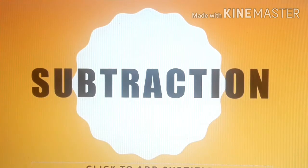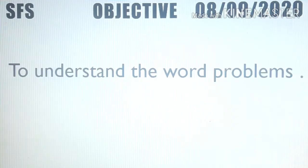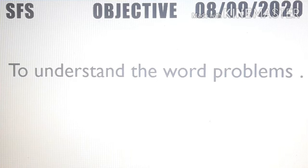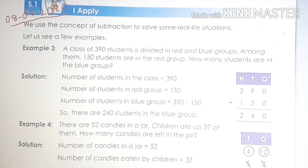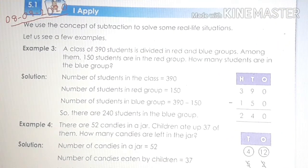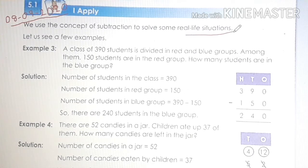So let's start the class. The objective of the class is to understand word problems. Today we will do some examples of word problems from the textbook. These examples will give you the concept of subtraction and how to solve some real life situations. So let's start with example 3.